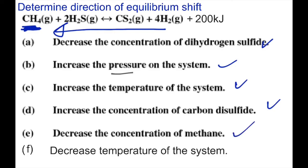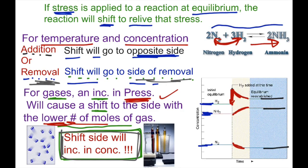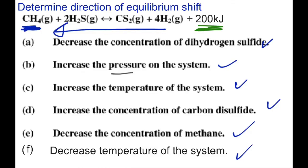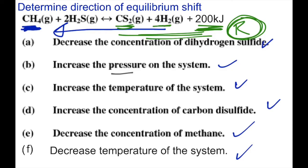Problem F: decrease the temperature of the system. Heat is on the product side of this reaction. If we take away heat, we are removing from the product side. By our rule, removal shifts to the side of removal — so the shift will go to the right. When the shift goes to the right, CS2 and H2 will go up in concentration.